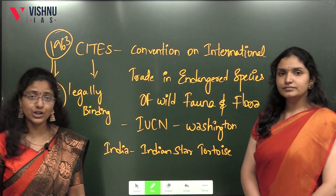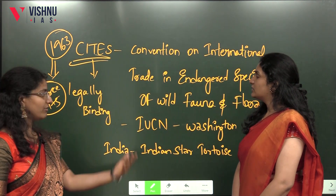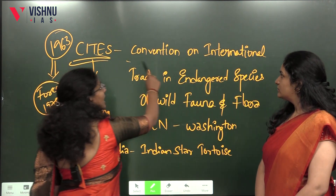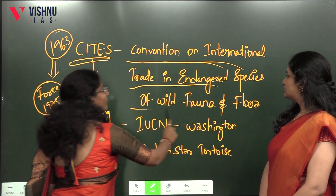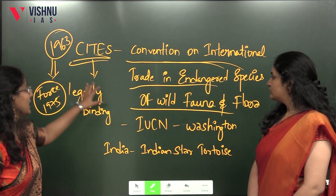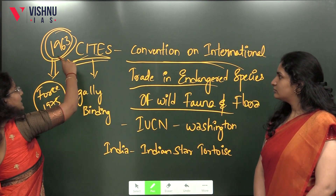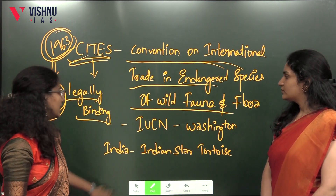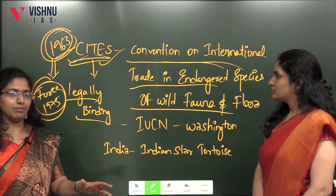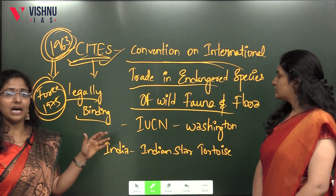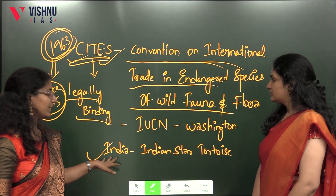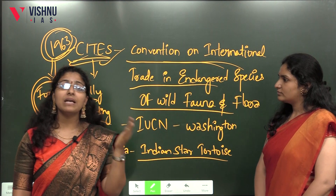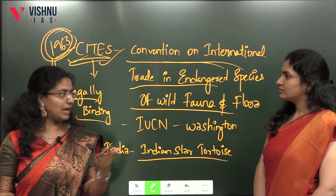CITES stands for Convention on International Trade in Endangered Species of Wild Fauna and Flora. It is an agreement that was signed in 1963 but came into force in 1975. It is a legally binding agreement signed by members of IUCN, originally signed in Washington. We'll make a dedicated video on CITES in detail, as it is a major current affairs topic. For example, India wants the Indian Star Tortoise to be upgraded from Appendix II to Appendix I of the CITES agreement.